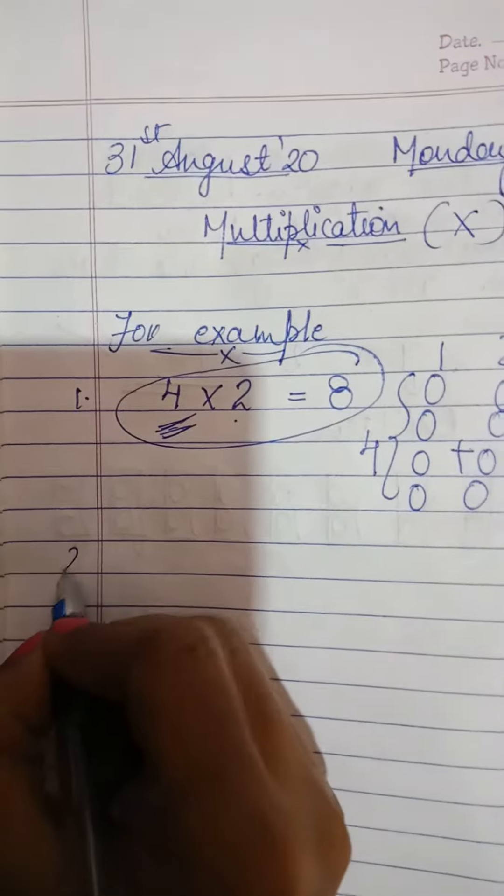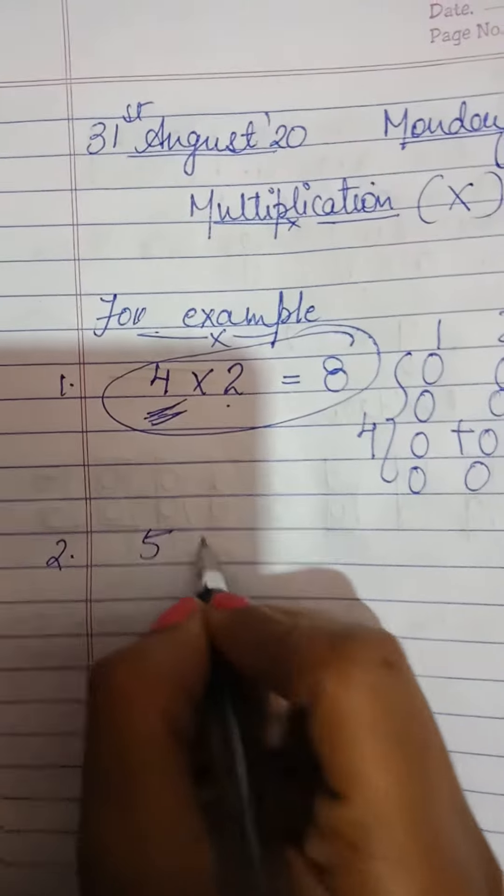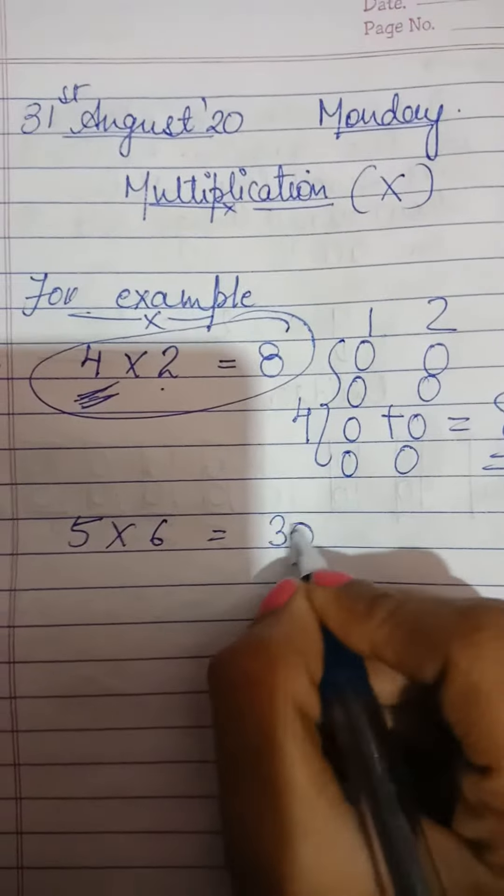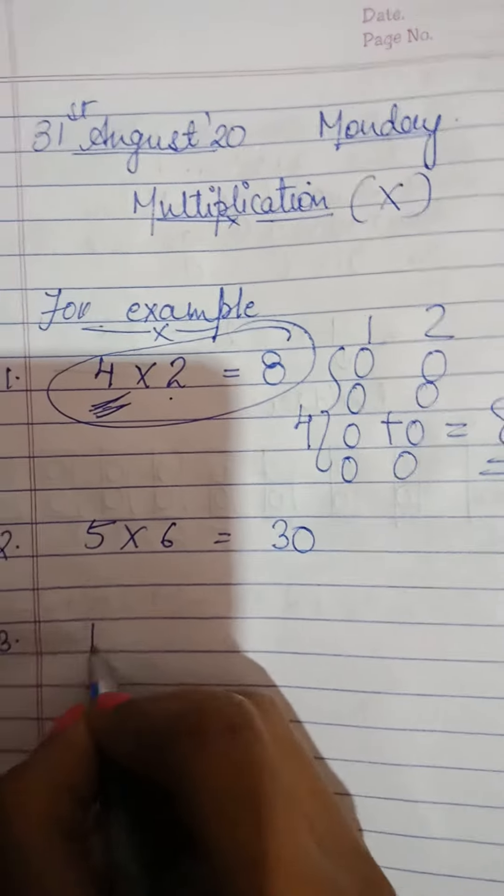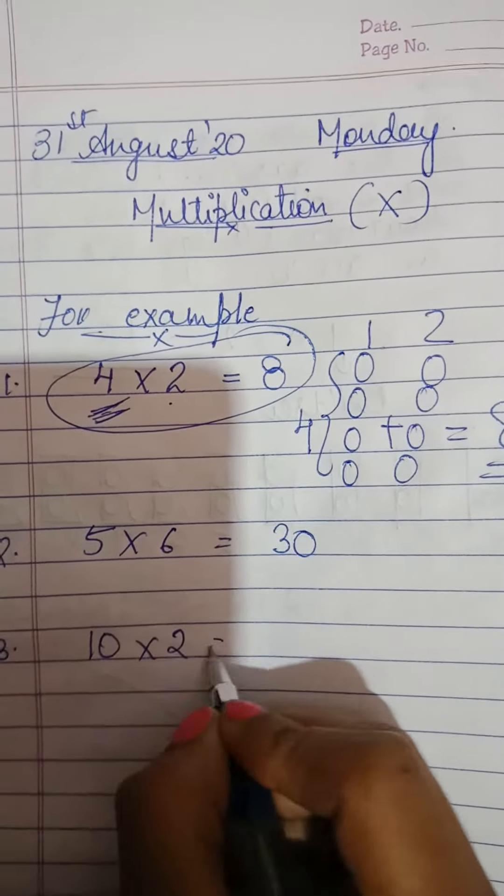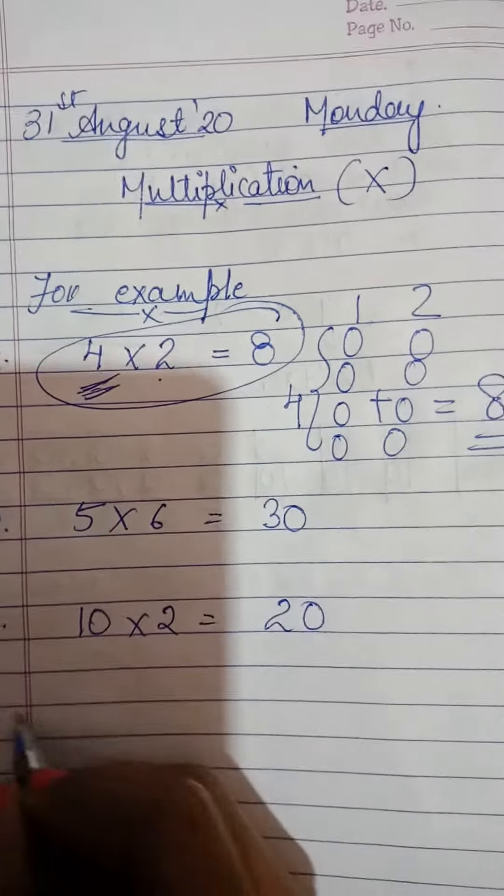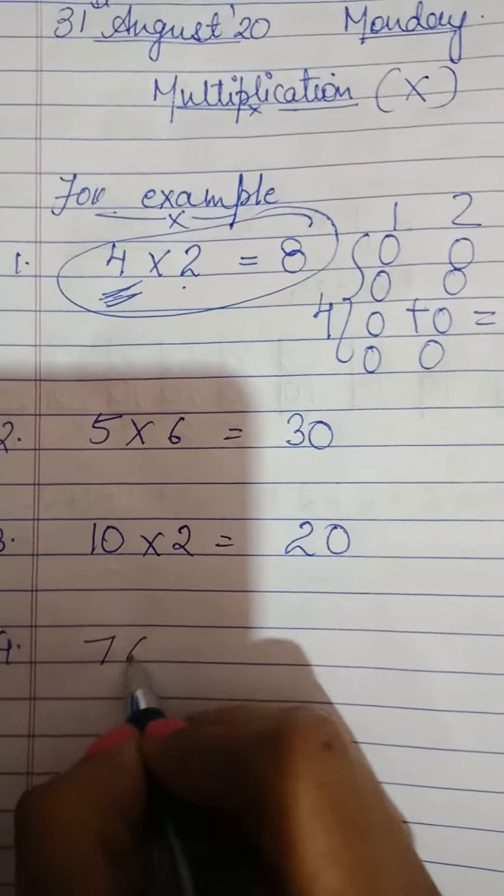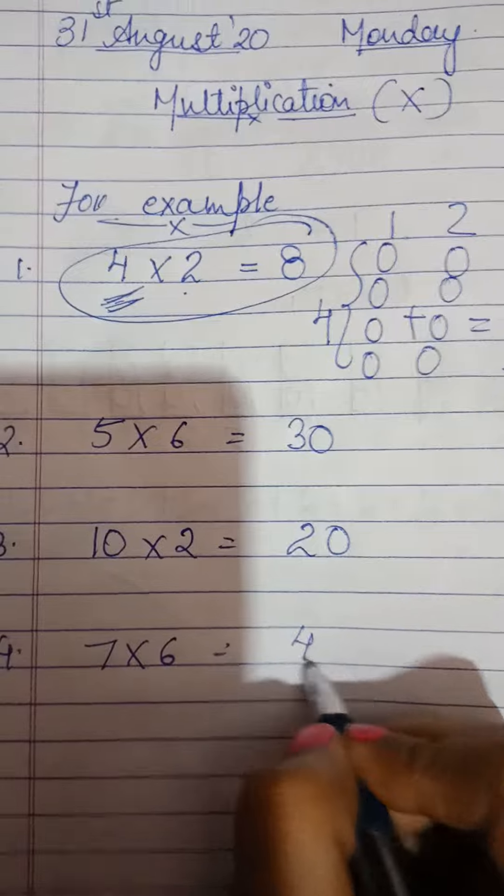Next example. 5 x 6 = 30. Let's take one more example. 7 x 6 = 42.